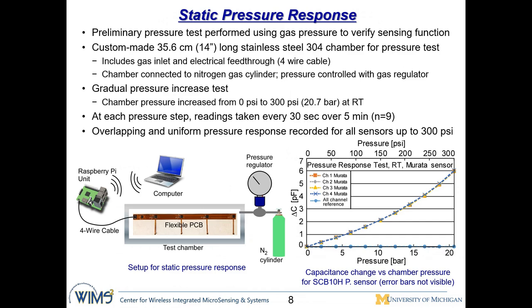We also did a static pressure test for the sensor, placing the microsystem in a gas chamber and applying pressure to measure its response. As shown in this plot, delta C as a function of pressure shows that all four channels provide very consistent and overlapping responses at different pressures up to about 20 bar, which is about 300 psi. The reference capacitor response stays at zero because there is no temperature change in this test.